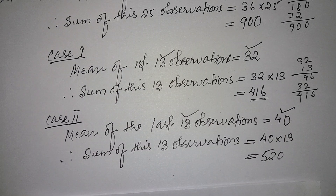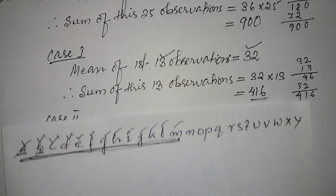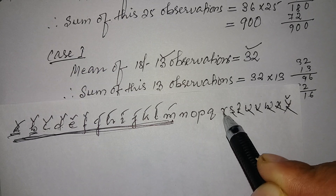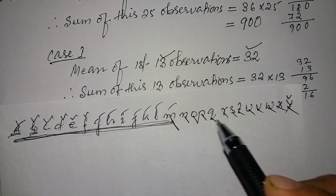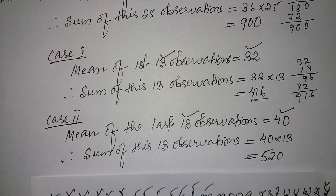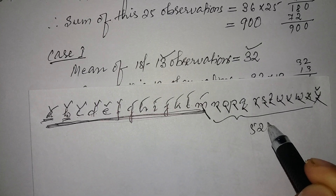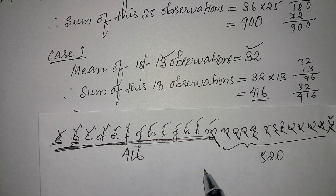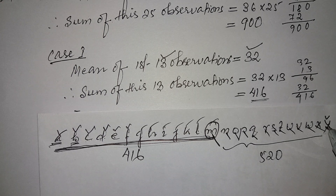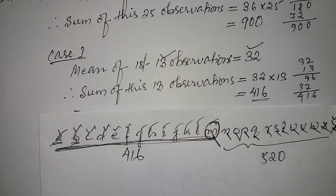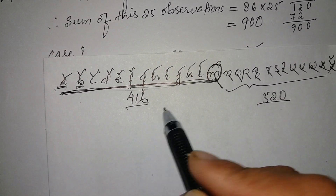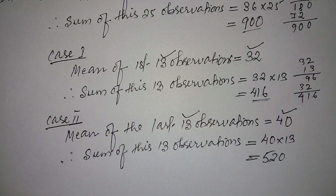In the second case, the last 13 observations run from position 13 to 25, and their sum is 520. We can see that when we consider the first 13 observations, the 13th observation is included. And when we consider the last 13 observations counting from the back, again the 13th observation is included. Since the 13th observation is included twice, we need to add the two sums and subtract the total.